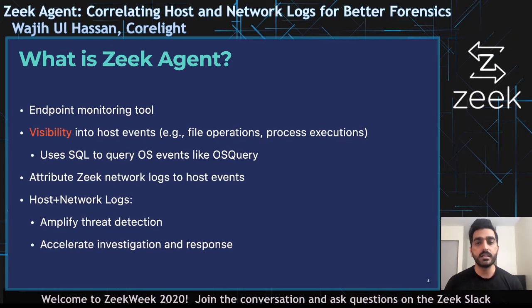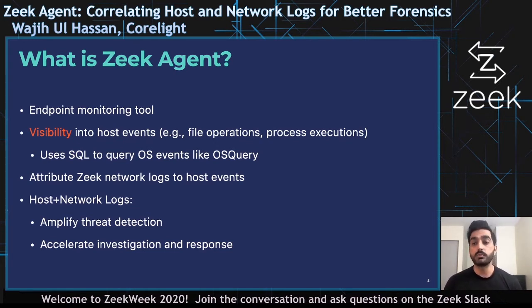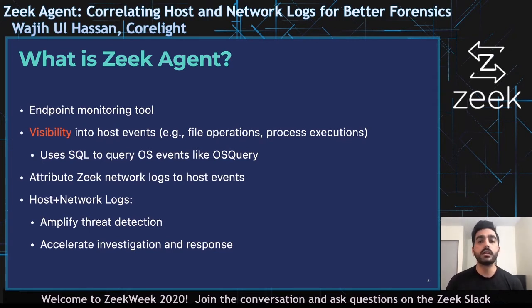However, what's cool about Zeek Agent is that it seamlessly correlates Zeek network logs with host events. When you see a network flow in Zeek's conn log, you can relate that network flow with the process event on the host which was responsible for that network flow. You can further find out attributes of that process, such as command line arguments or user ID. This event correlation between host and network log has a lot of power. Security analysts could leverage correlated event logs to amplify threat detection by writing more enriched detection rules, and also use these correlated logs to generate high-fidelity contextual information while investigating threat alerts.